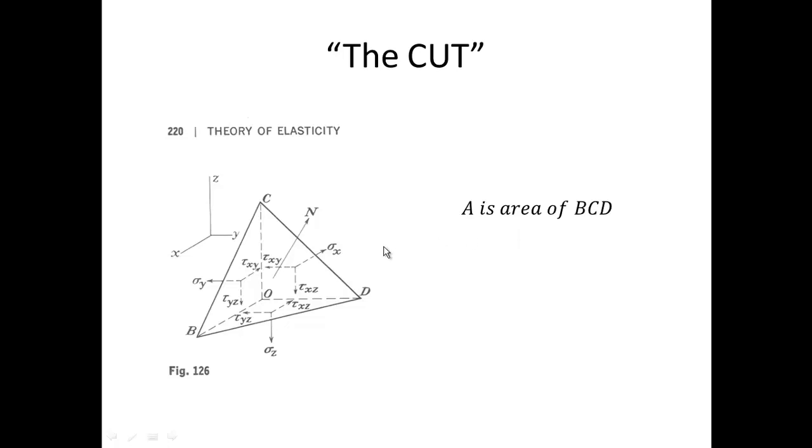Let A be the area of the triangle BCD, and let n be the normal to that triangle. Let the angle between n and x be theta x, and similarly theta y and theta z can be defined for the y and z directions.